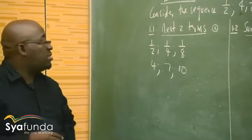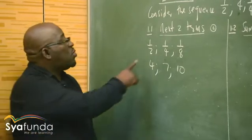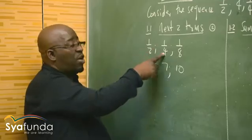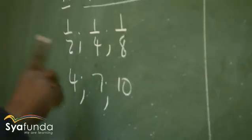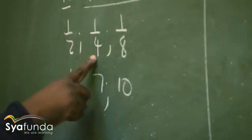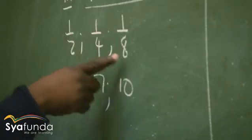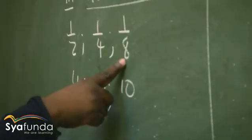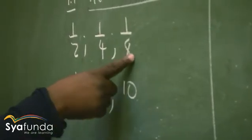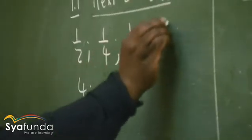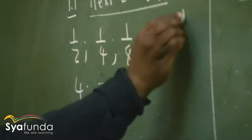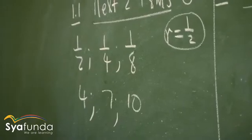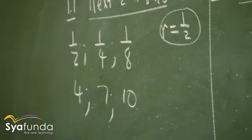Let's look at how this pattern worked. We've got 1/2 times what gave us 1/4? Times 1/2 gave us 1/4. One over four times what gave us 1/8? Times another 1/2. So in other words, this divided by that gives us the common ratio of 1/2. We've got the common ratio there, which is 1/2.